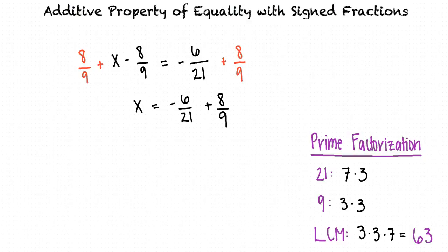So now we need to manipulate our fractions so they have common denominators of 63. We can do this by multiplying negative 6 over 21 by 3 over 3 and multiplying 8 ninths by 7 over 7. When we do this, our fractions become negative 18 over 63 and 56 over 63. Now we must add our fractions together.